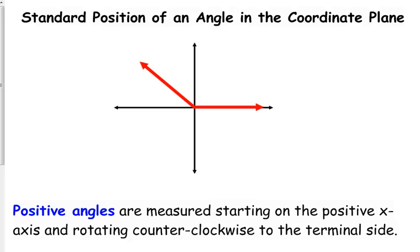So the standard position of an angle, as I mentioned before, we start on the positive x-axis. This is our initial side right here of our angle. That is where we always start. And then we rotate to the terminal side.